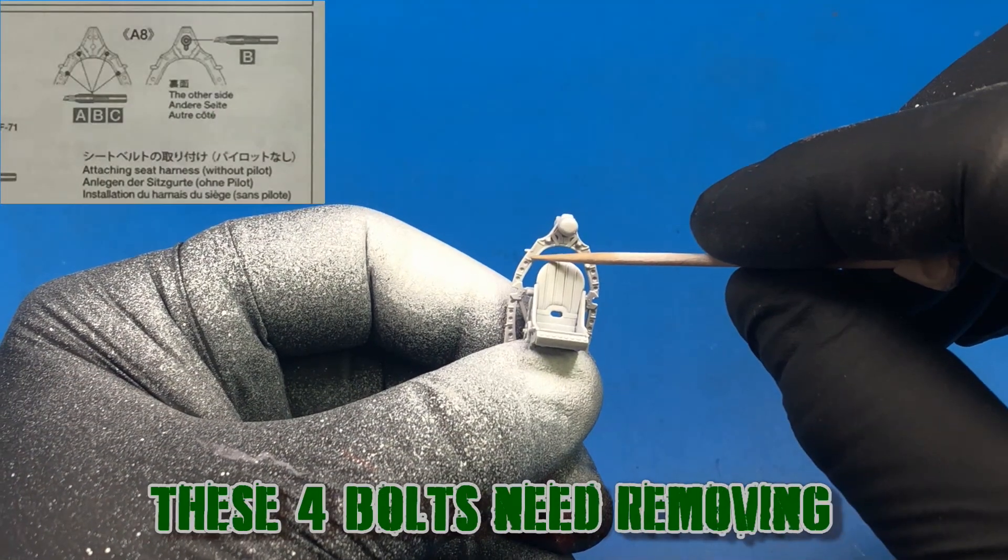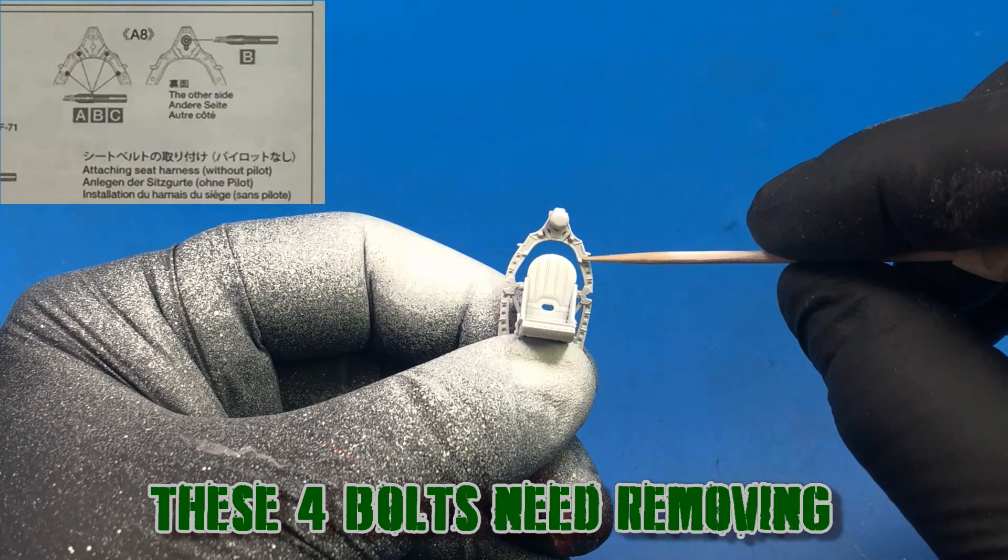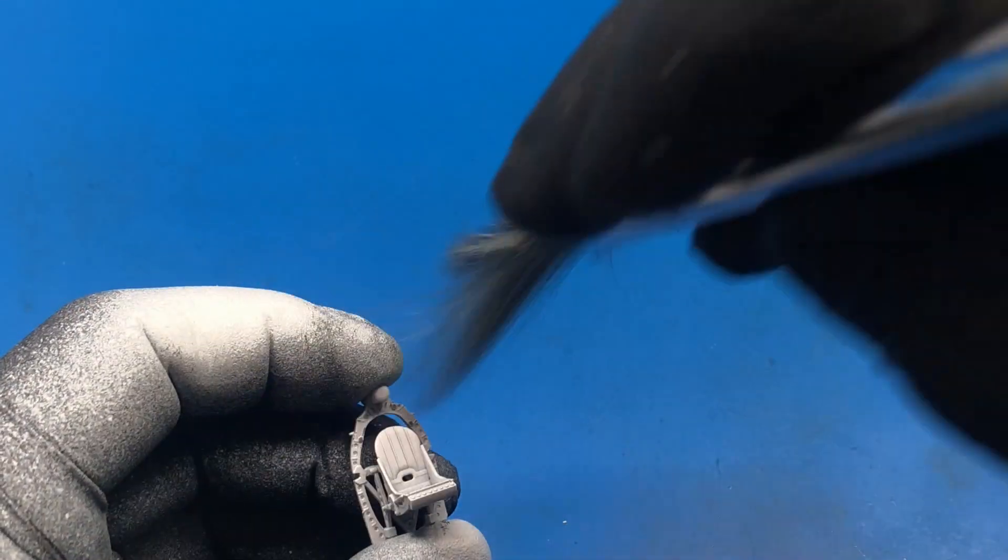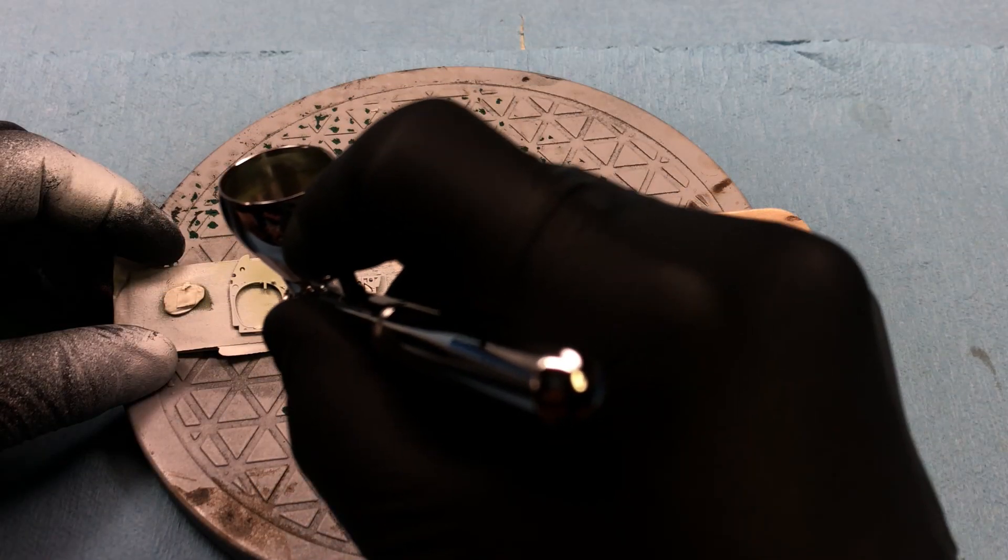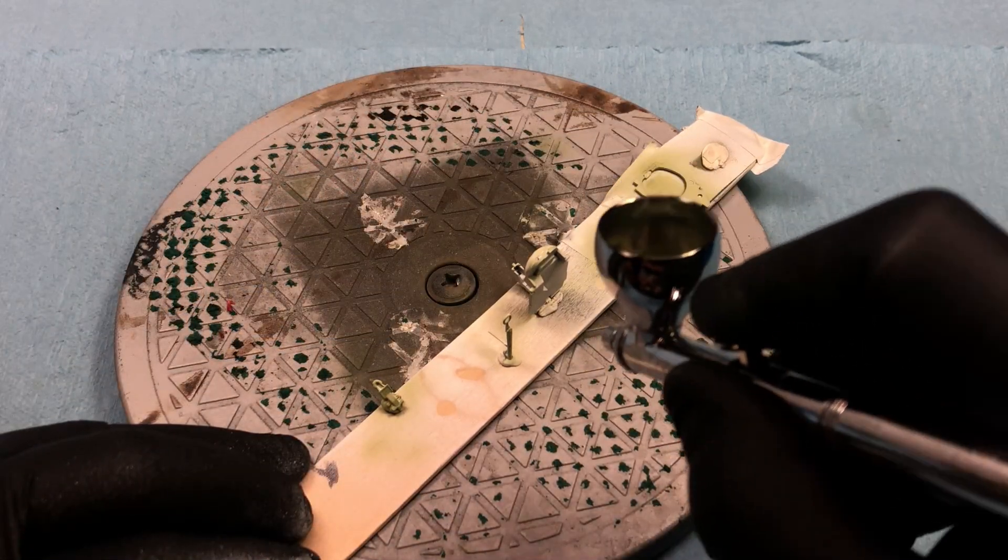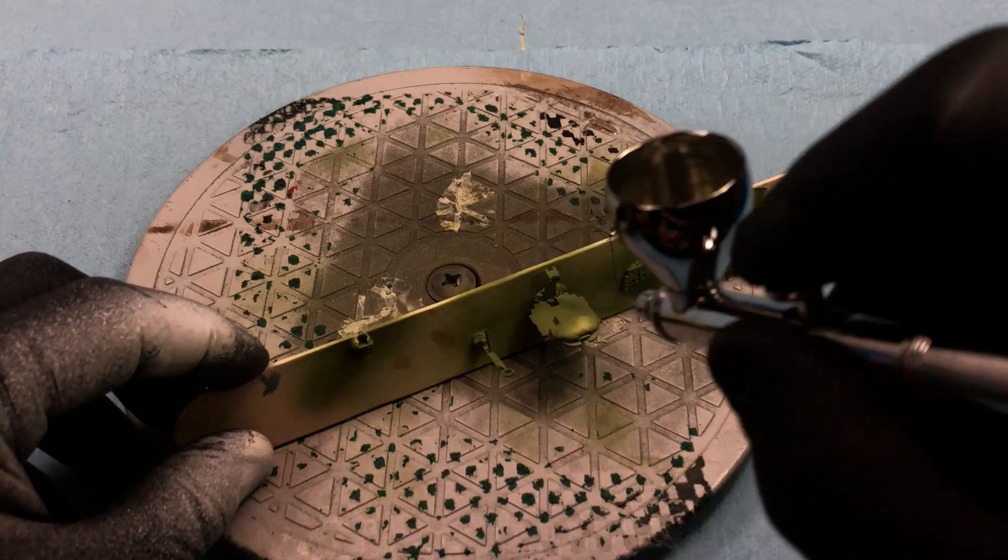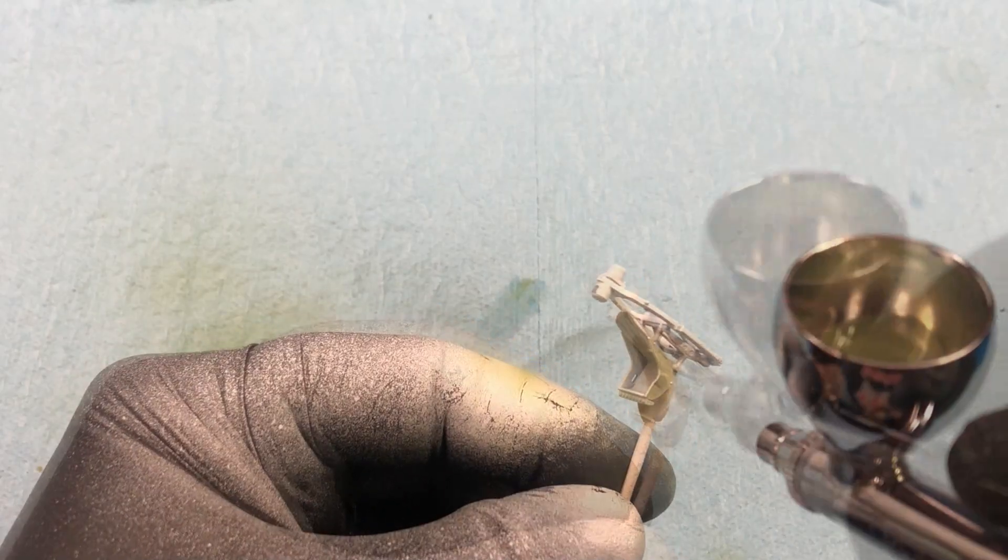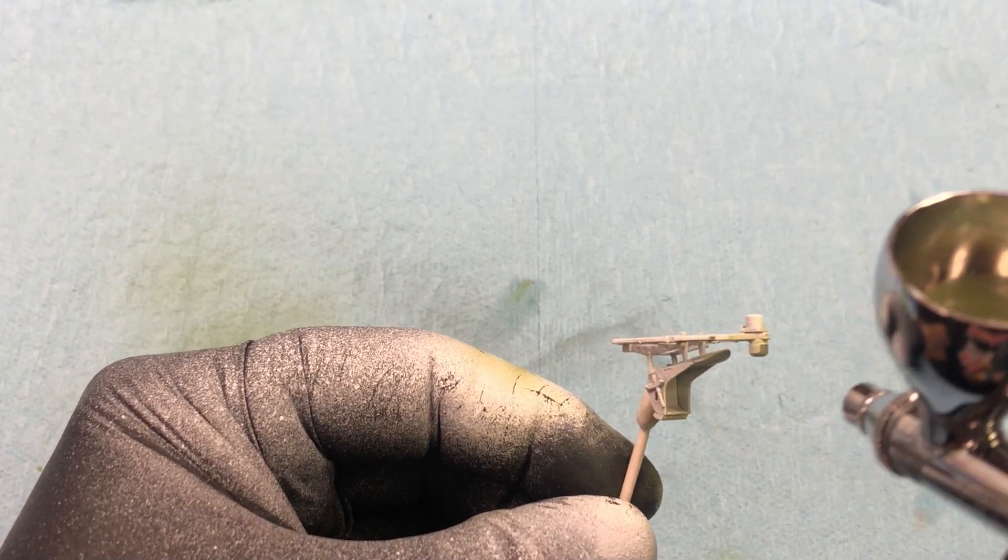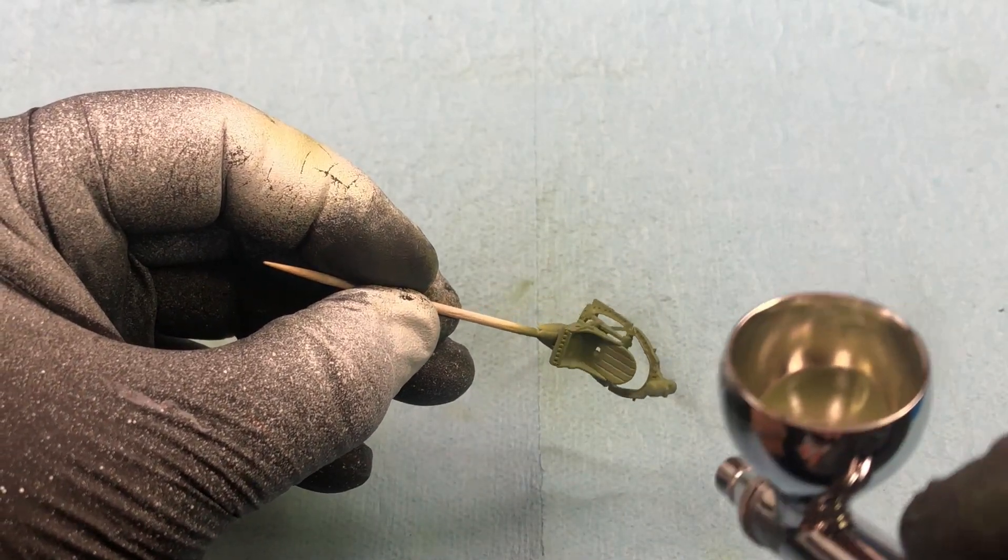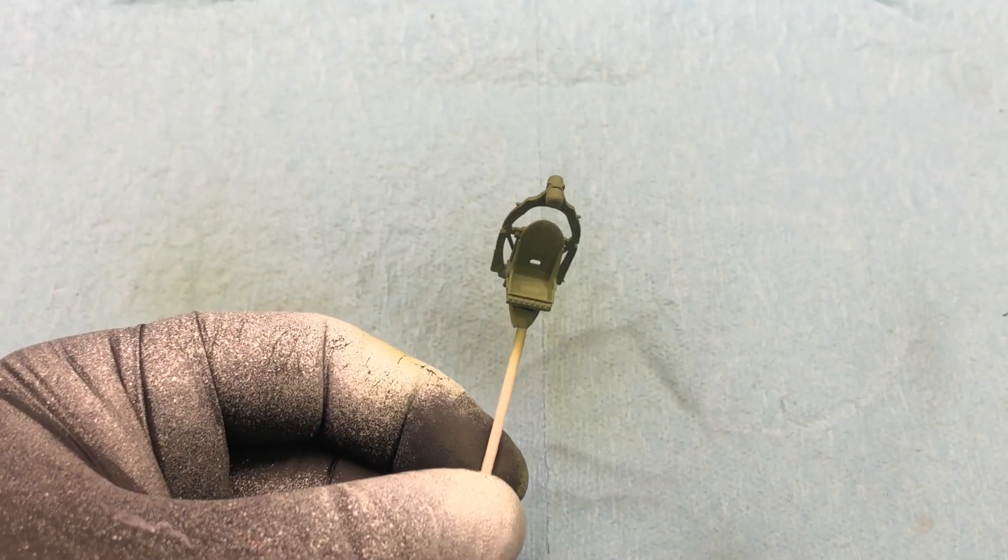The instructions have you cut off these four bolts and from the reference I've seen, it is correct. As you can see, this is the proper way to spray paint. There's a lot less in the cup and chances of you spilling are pretty much nil. Unless of course, you're a cotton headed mini muggins like this guy. As you can see, the color of the cockpit green is a little on the dark side, but you'll see how I lighten that up later on in the video.